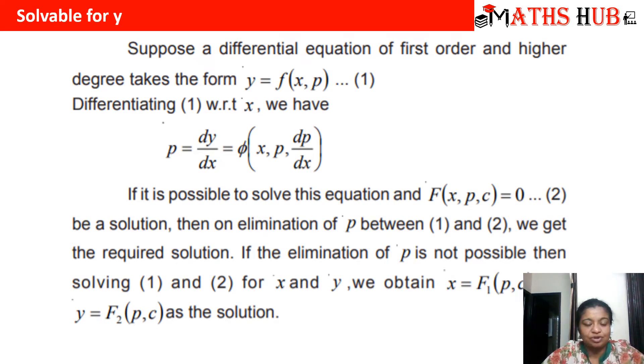In the last video I told you about solving by p. In solvable for y, your equation must be expressed as y as a function of x and dy by dx. We know that dy by dx is equal to p, that means your equation must be in the form y equals f of x comma p, where p is dy by dx.